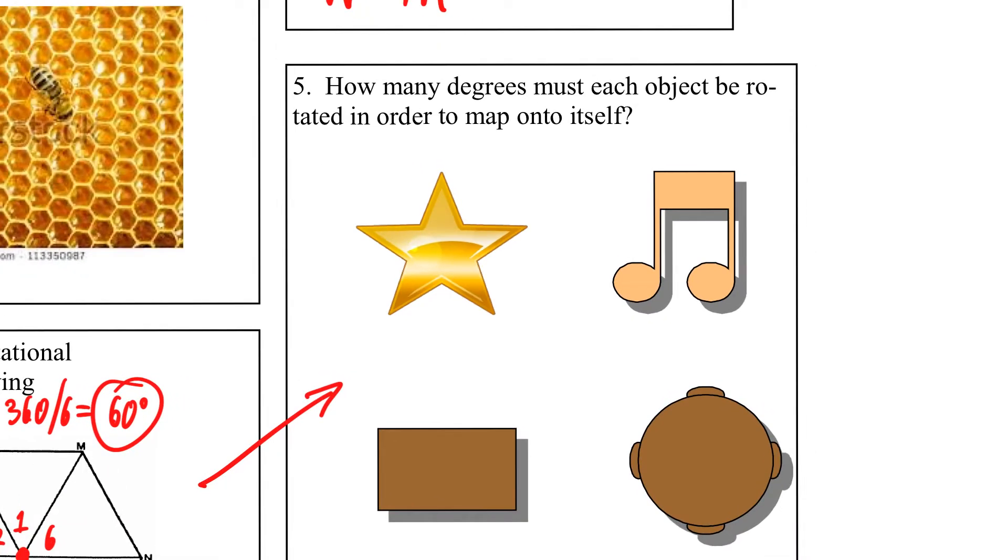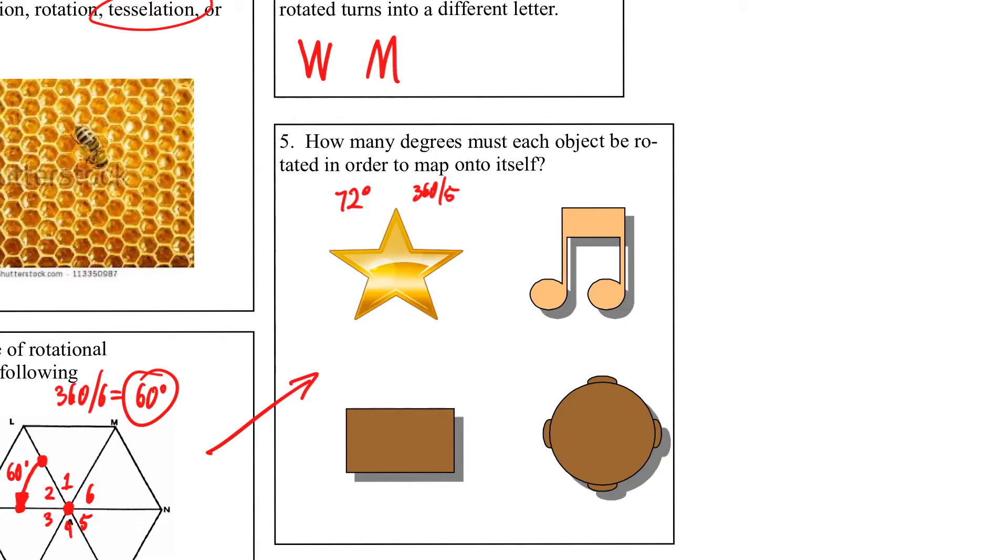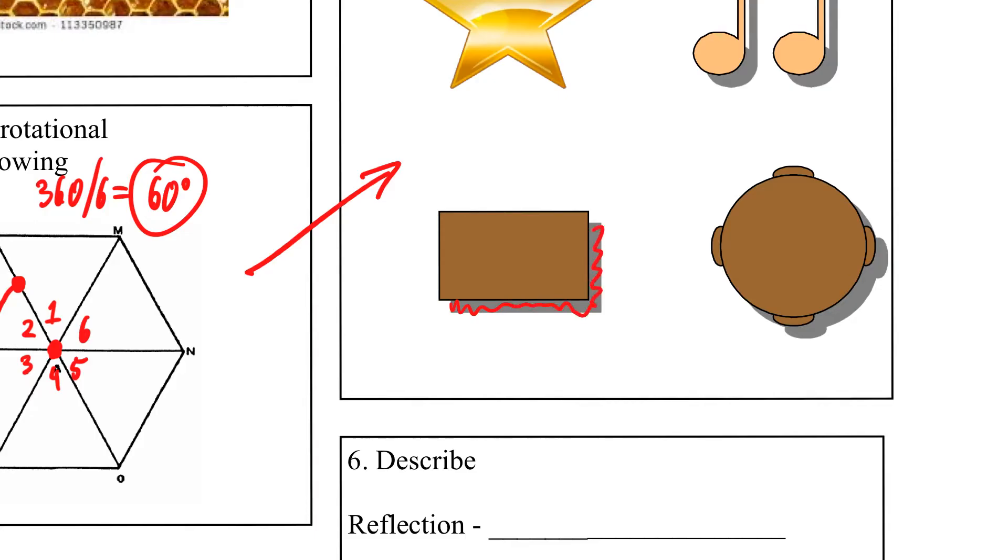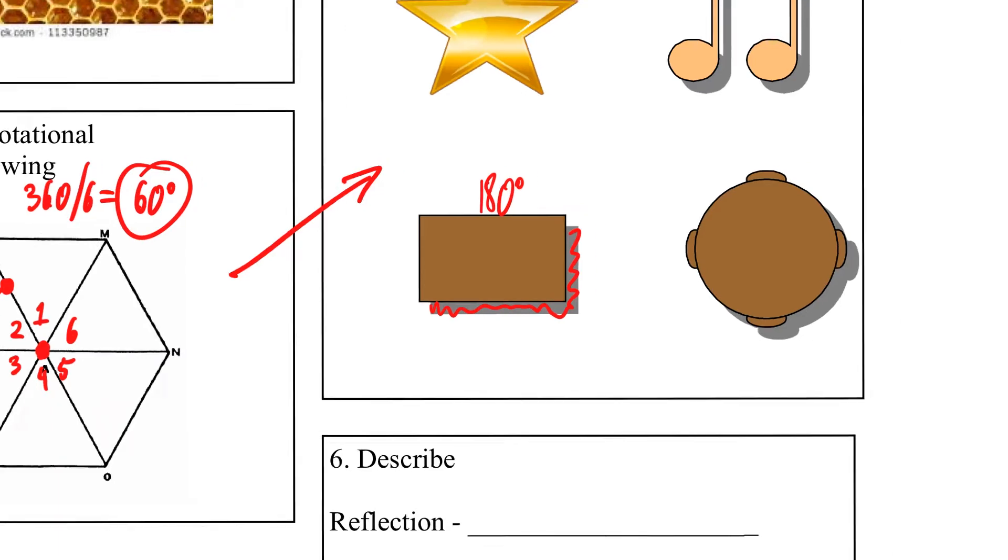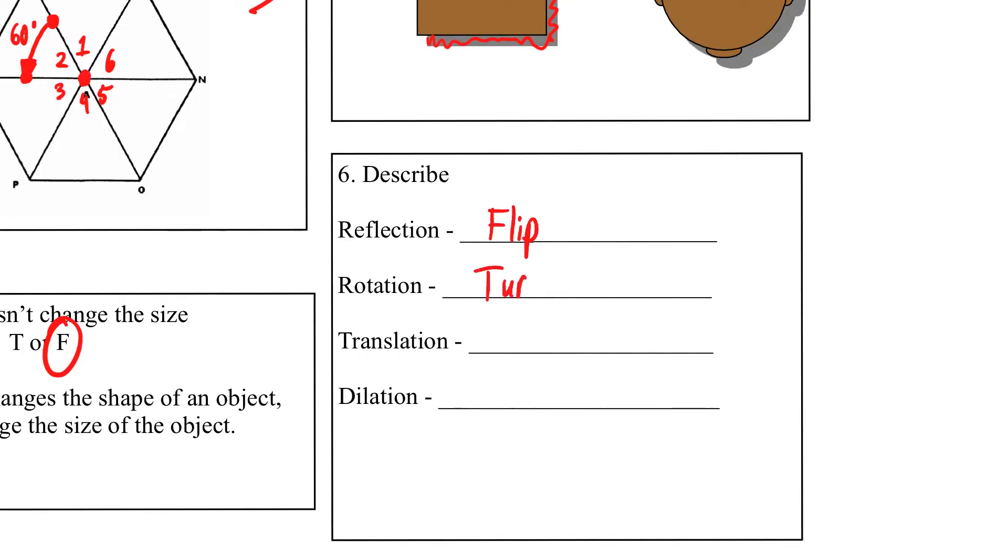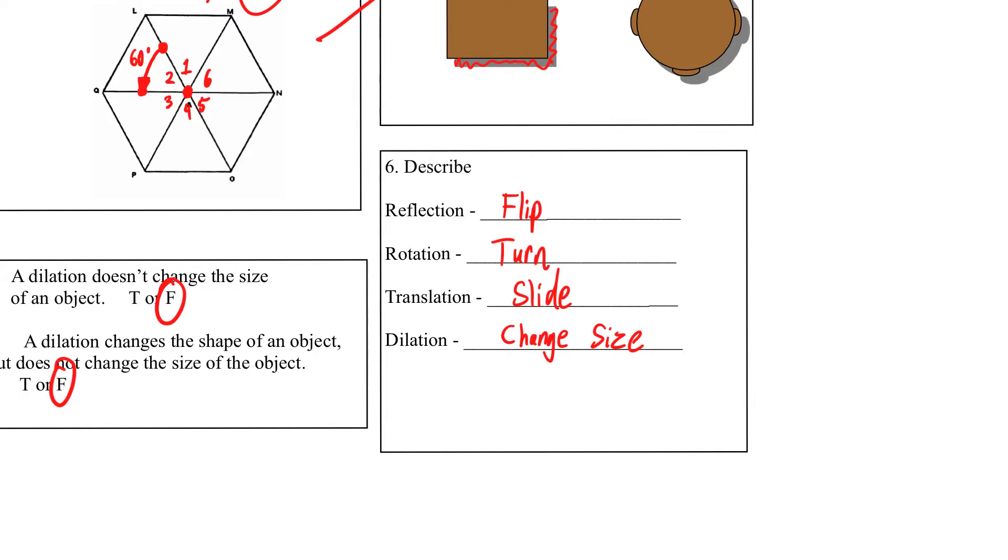All right, number five. How many degrees must each object be rotated to map onto itself? Star is 72. So this one's 72. It's 360 divided by five. Music note is 360. What kind of music note is this, by the way? I have no idea. Okay, somebody's music can hear. What value is that? Rest. Half, whole, quarter, eighth, sixteenth. Eighth. It's eighth note. Okay, good. Yeah, so this one's 360. It does not have rotational symmetry. Okay, on this one, the shadow should not be on here. How many degrees does this rotate? 180. 180. And then on this one is what? 90. It's 90. Okay, reflection is a flip. A rotation is a turn. Translation is a slide. And a dilation changes the size. Flip, turn, slide, change the size.